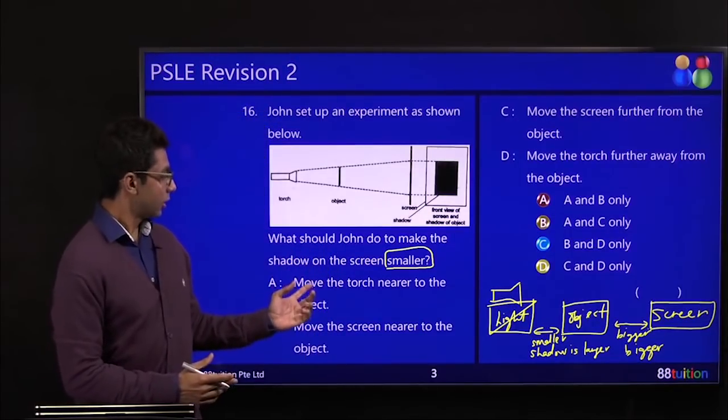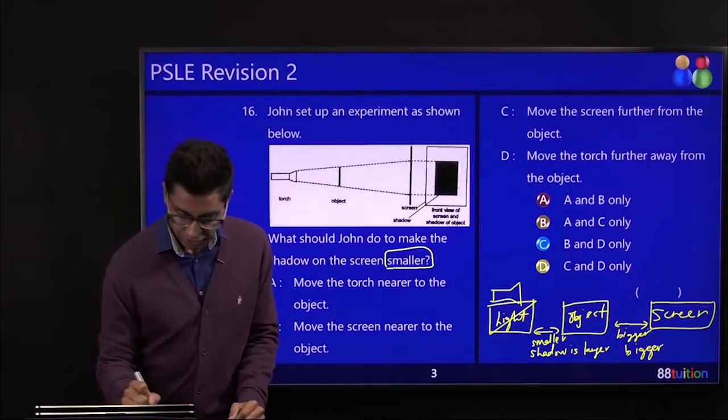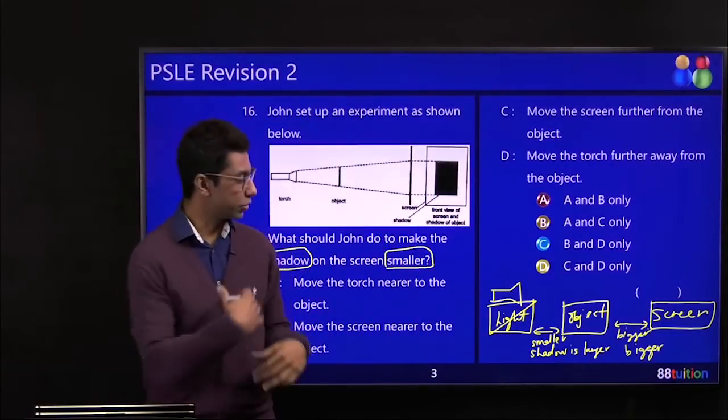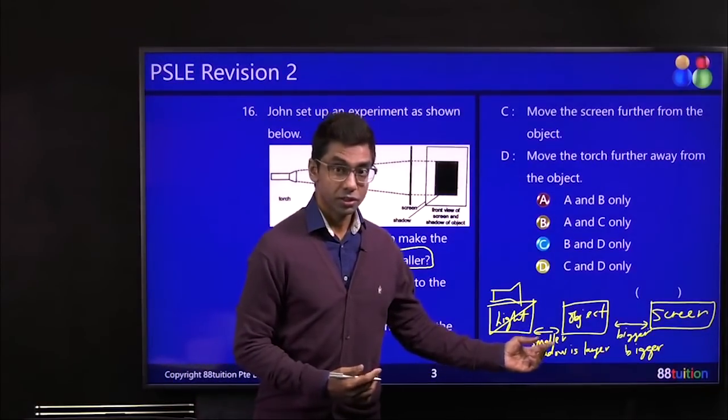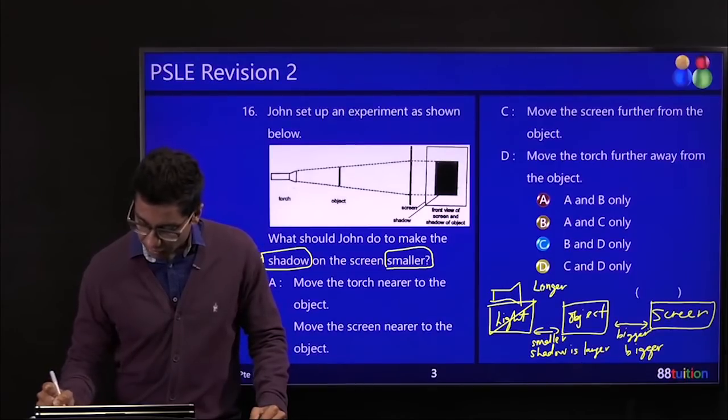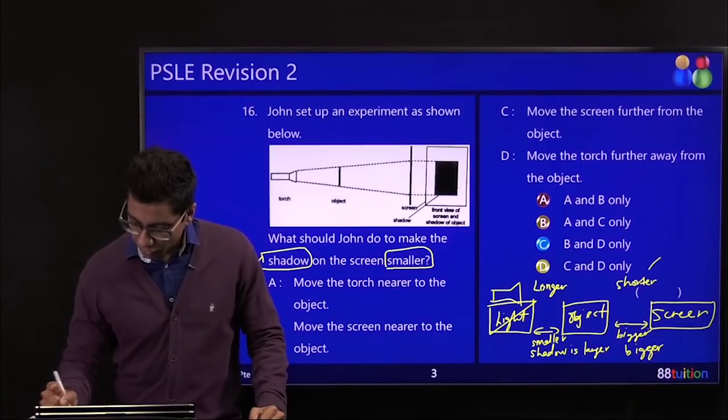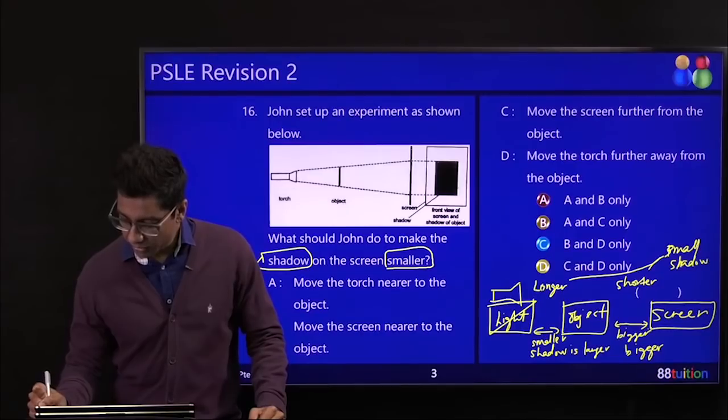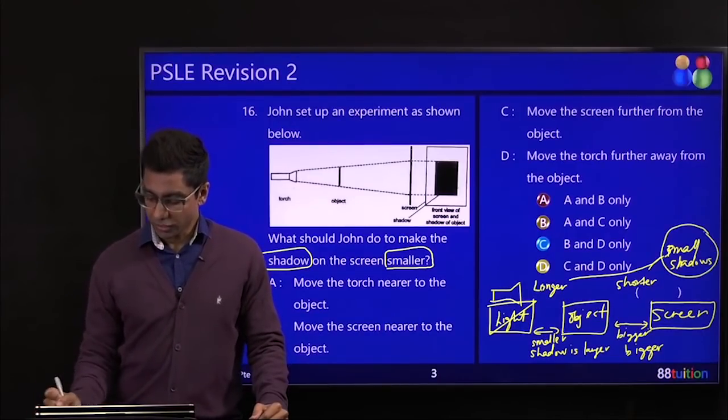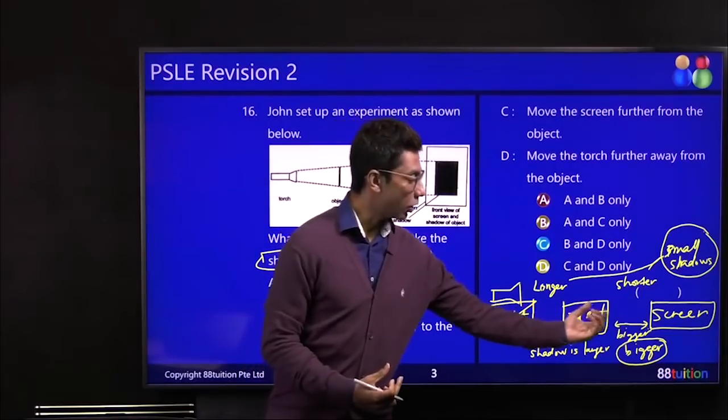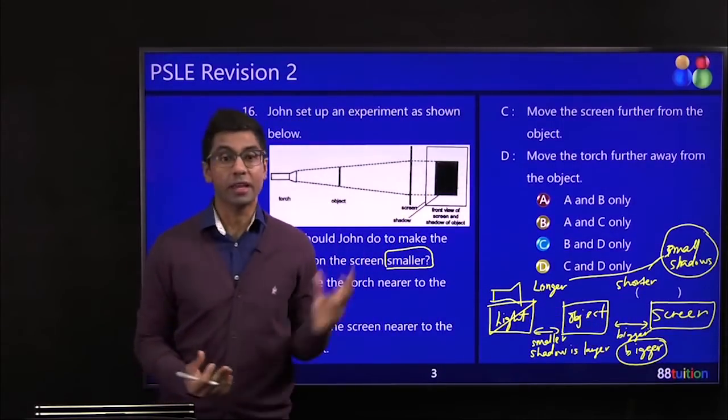Now shadow is bigger too. Don't be confused. When you make this distance shorter, you are making this longer at the same time. So the effect is still the same. The shadow is larger. So this is what you need to know as a concept. Now, our friend John wants to make the shadow smaller. Not bigger. So you're going to do opposite. So here should be longer. Here should be shorter for small shadows. So that's basically it.